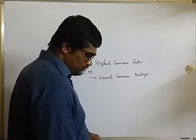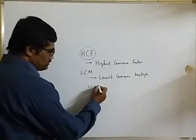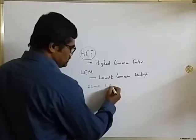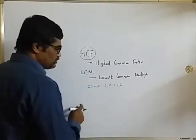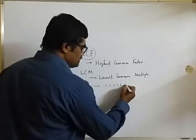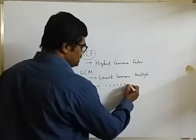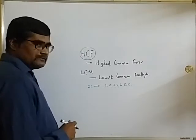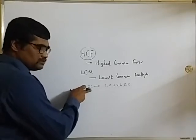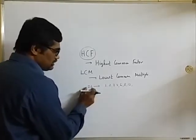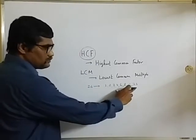Consider the number 24. What will be the factors of this? Factors are those numbers which will divide it: 1, 2, 3, 4 — 5 will not divide — 6 will divide, 7, 8 will divide. Then 9 will not divide, 10 will not divide, 11 will not divide, and 12. Once we arrive at 12, remember: if you get a number close to half of the original number as its factor, you can directly jump to the last number itself as a factor. That means there will be no other factor of 24 after 12.